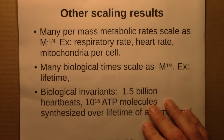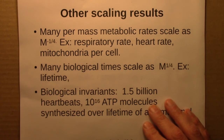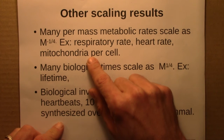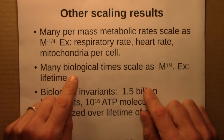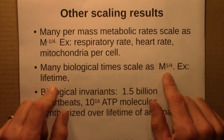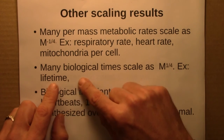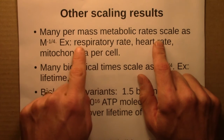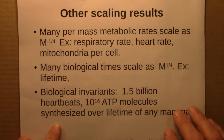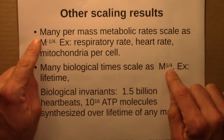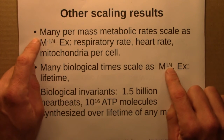A number of other scaling laws follow from the basic three-quarters scaling law for metabolism. Many per-mass metabolic rates scale as M to the minus one-quarter — examples include respiratory rate, heart rate, and the number of mitochondria per cell on average. Biological times, which are the inverse of rates, tend to scale as M to the plus one-quarter, and examples include a creature's lifetime. When a minus-quarter rate and a plus-quarter time are multiplied together, the mass dependence cancels out, giving something invariant across many life forms.